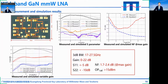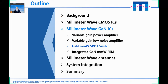The next part is the variable gain low noise amplifier. Here is the photo of the LNA chip. The size is 2 by 1 millimeter. The 3 dB gain frequency range is from 17.17 to 27.5 GHz. The lowest noise figure is 1.7 dB, and the noise figure is lower than 2.4 dB across the whole operating band.